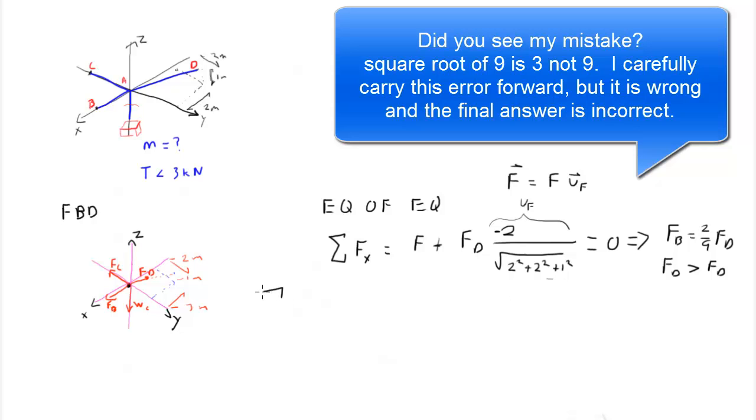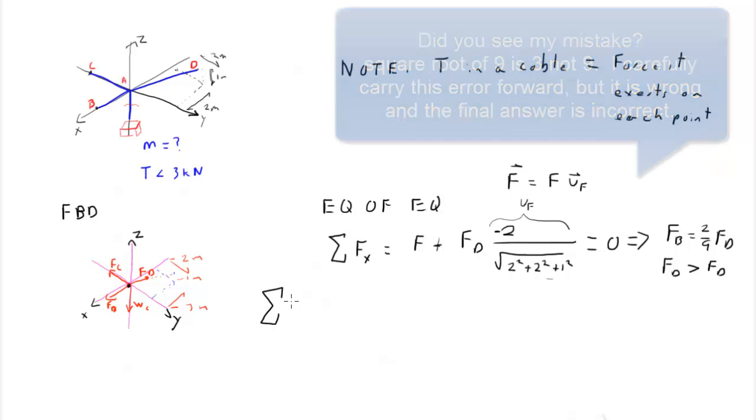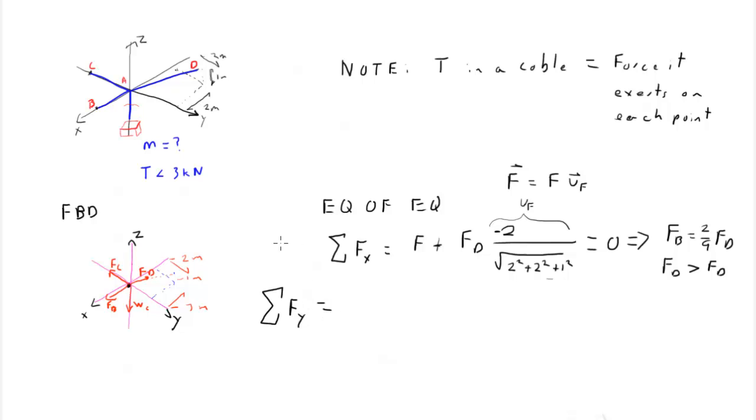We can do the same thing with the sum of forces in the y direction. I have minus FC, and I have plus FD. In the y direction, I have two in the y direction divided by the magnitude, which is nine, equal to zero. That means that FC equals FD times two ninths. That means that FD is greater than FC.